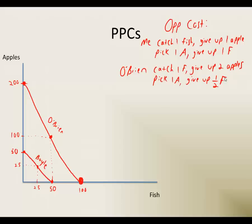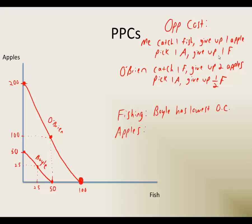Now let's compare our opportunity costs. For fishing, it turns out that I have to give up one apple, and Bill has to give up two apples — so I have the lowest opportunity cost for fishing. For apples, I have to give up one fish for every apple, but O'Brien only has to give up half a fish for every apple. Because his one-half fish is a lower opportunity cost for apples, O'Brien has the lowest opportunity cost for apples. And the lowest opportunity cost means you have the comparative advantage.